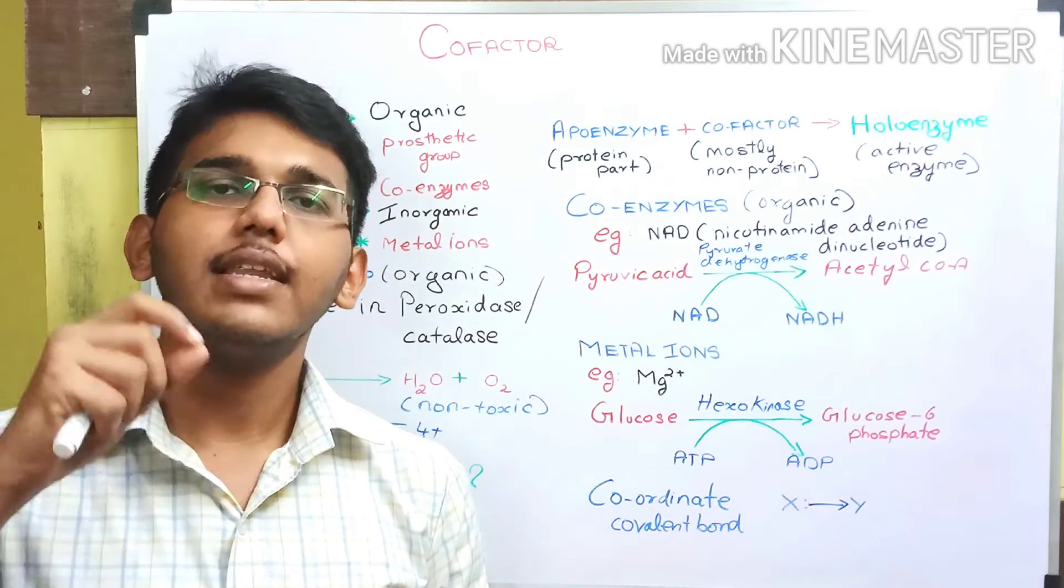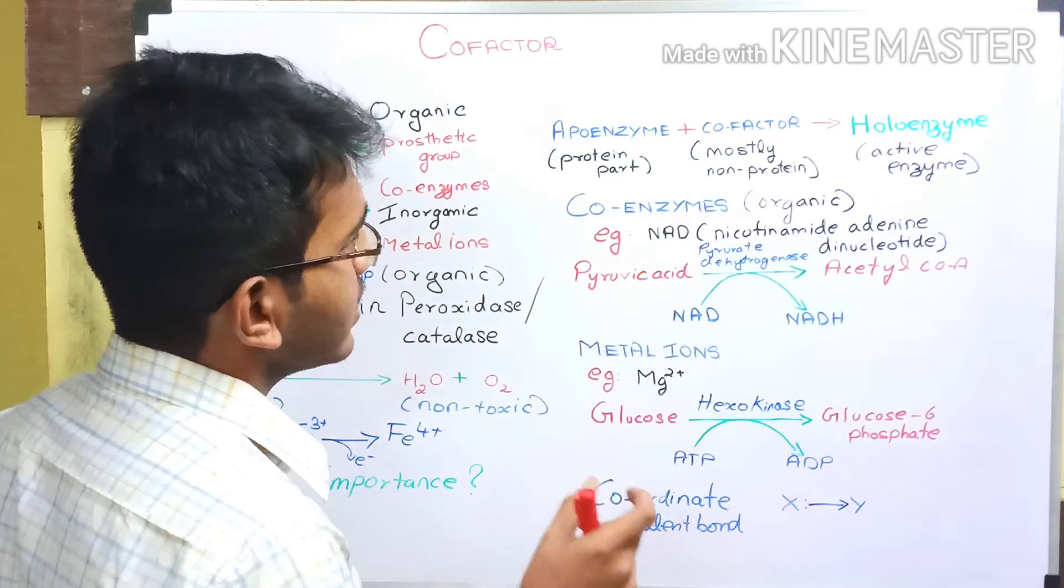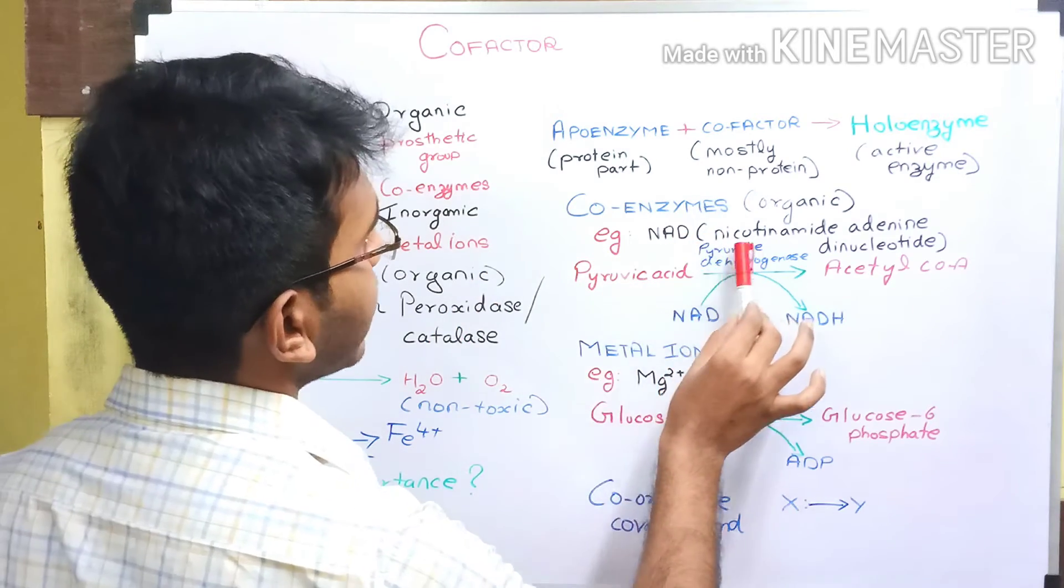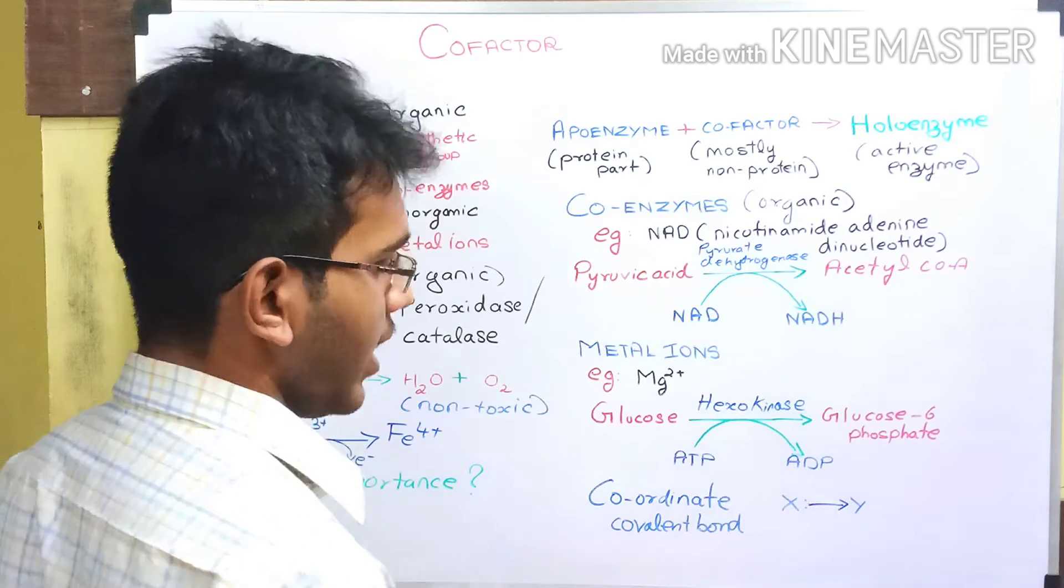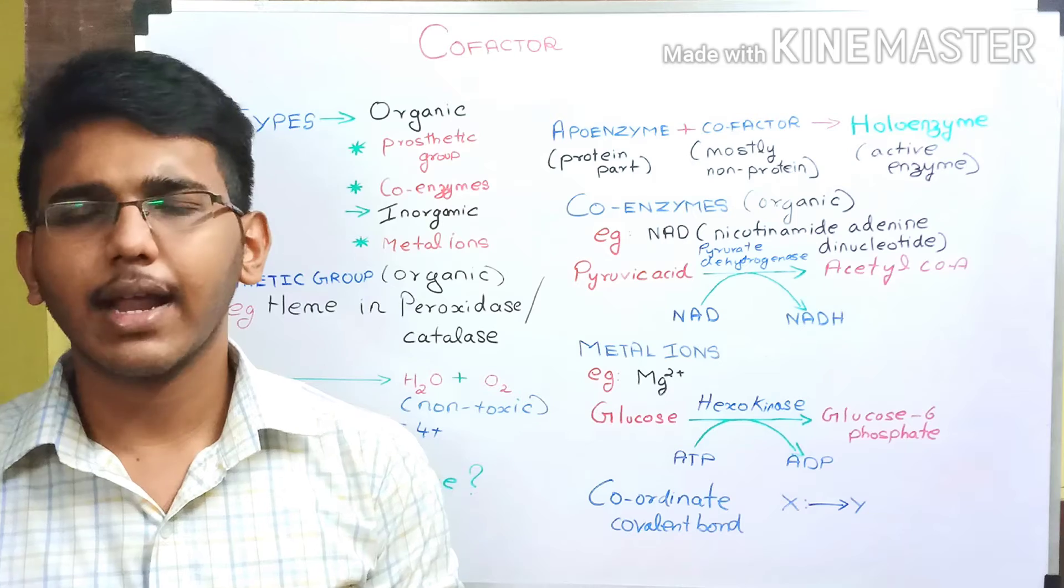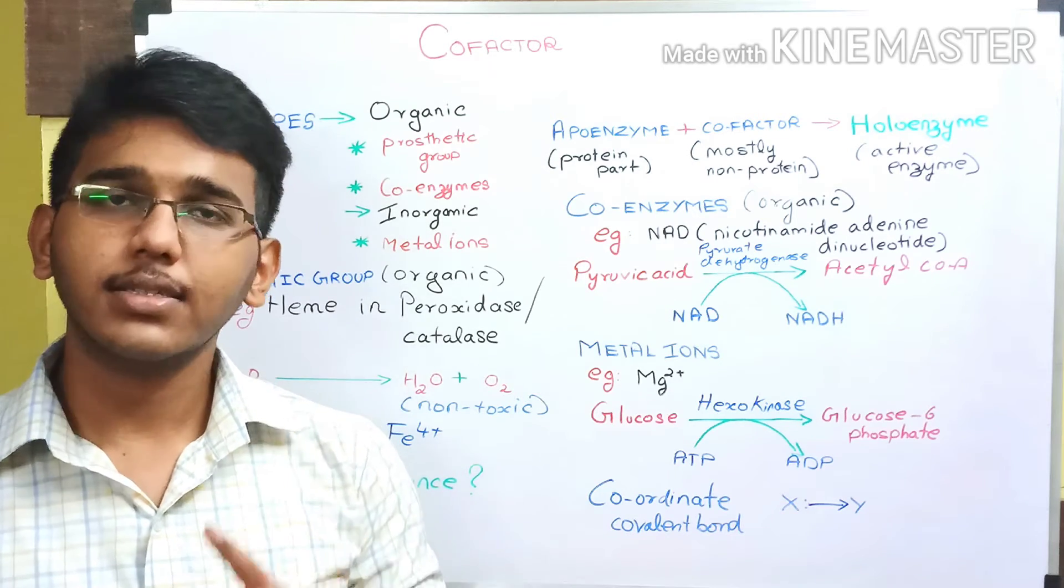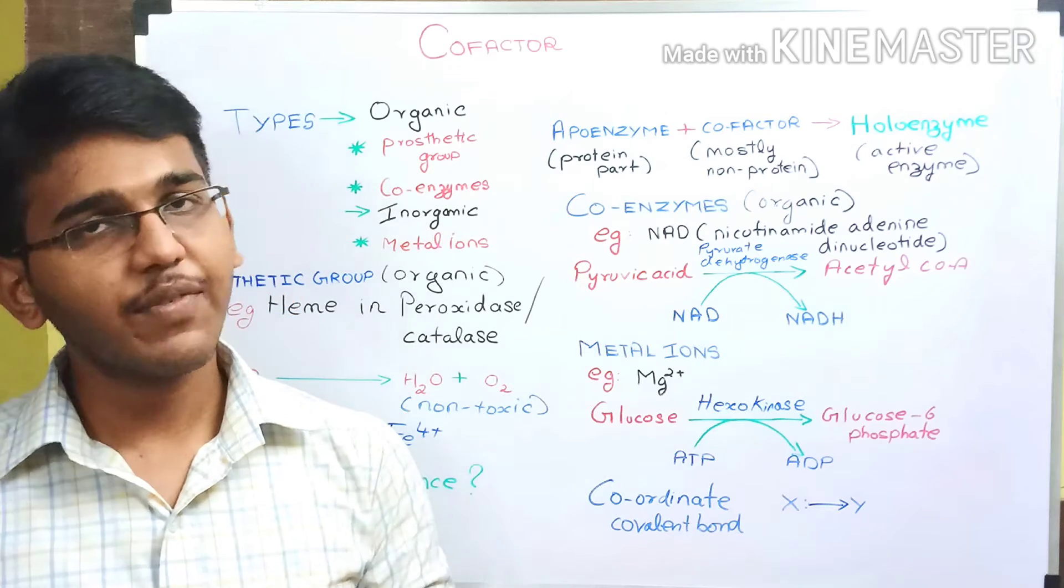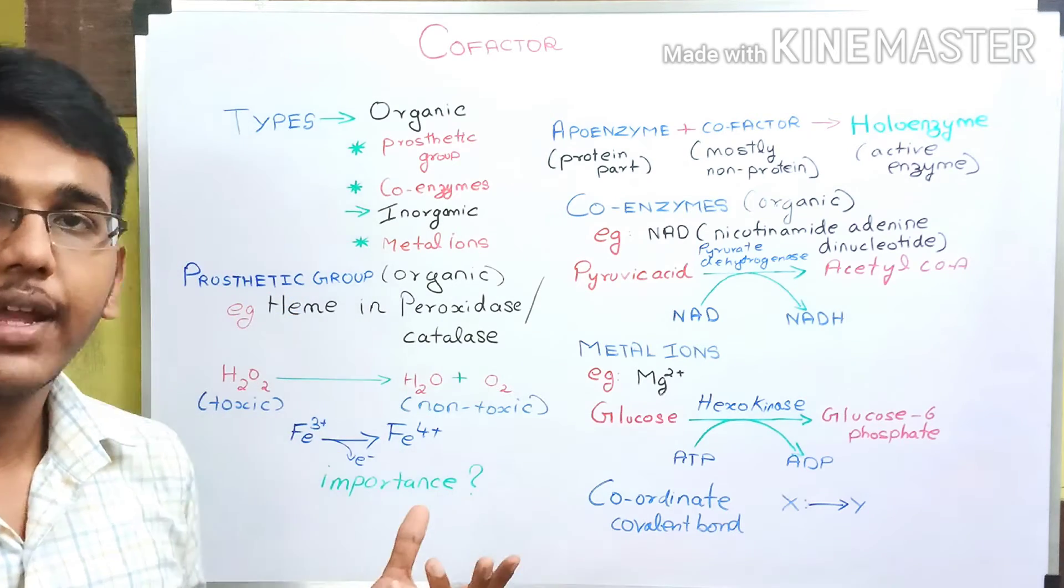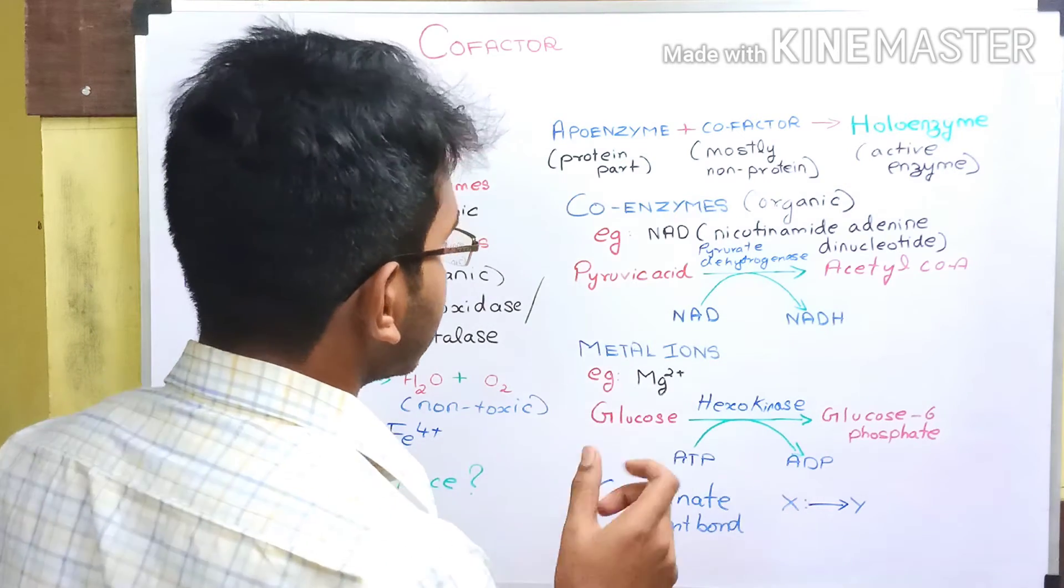If you see the example of coenzyme, NAD, that is nicotinamide adenine dinucleotide. You can find this NAD in all the biological mechanisms of respiration, for example glycolysis, oxidative decarboxylation, and even in Krebs cycle. Here we have taken the example of oxidative decarboxylation.